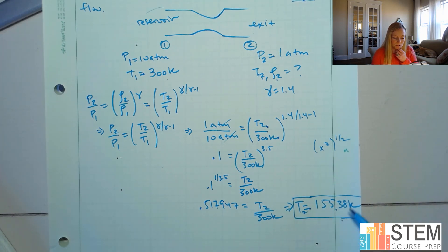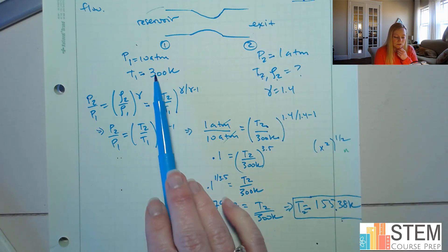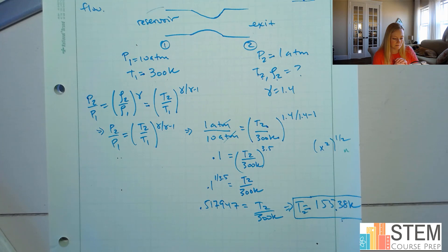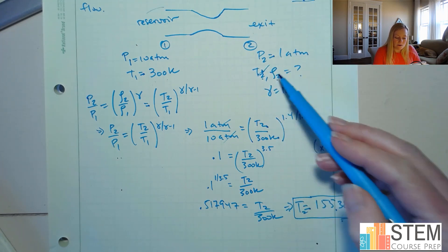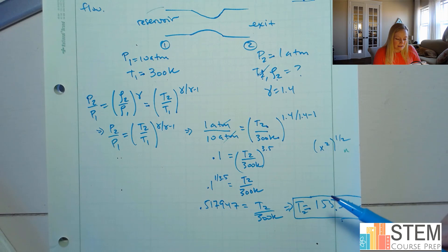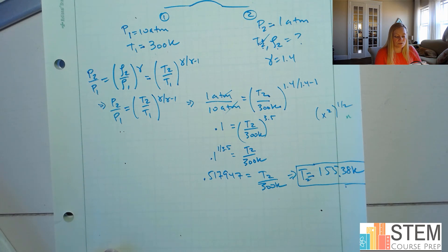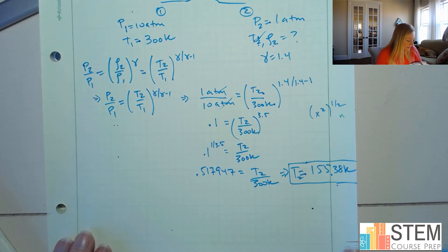Okay, so that's our temperature here at the exit. So you can see your temperature is going to decrease as we go through that duct. So now we've got this. Now I just need density. And again, we're just going to use these relationships. Okay, so now we want density, and you could use pressure, or you could use temperature, whichever one you want. I'm going to go ahead and use density and temperature.